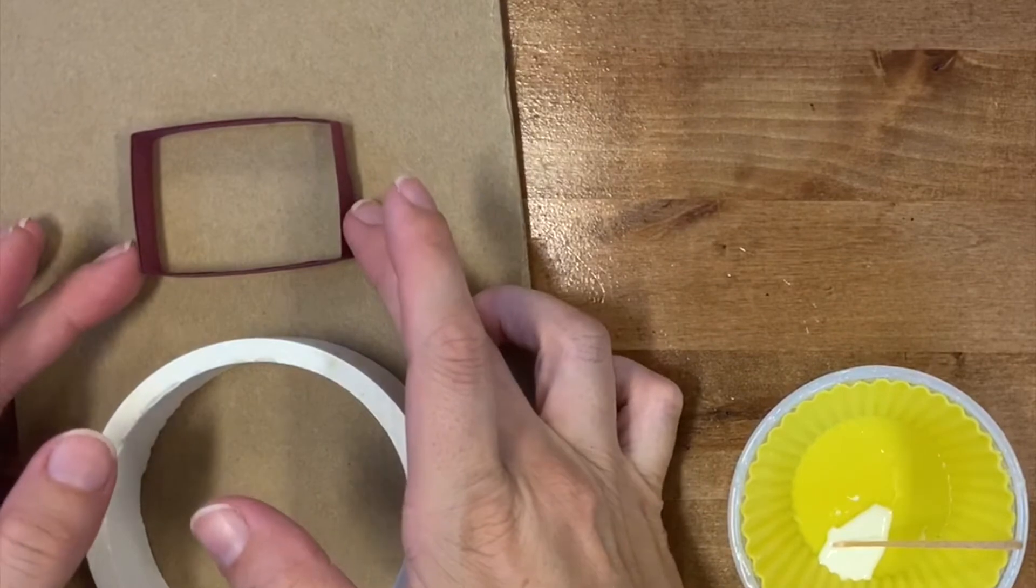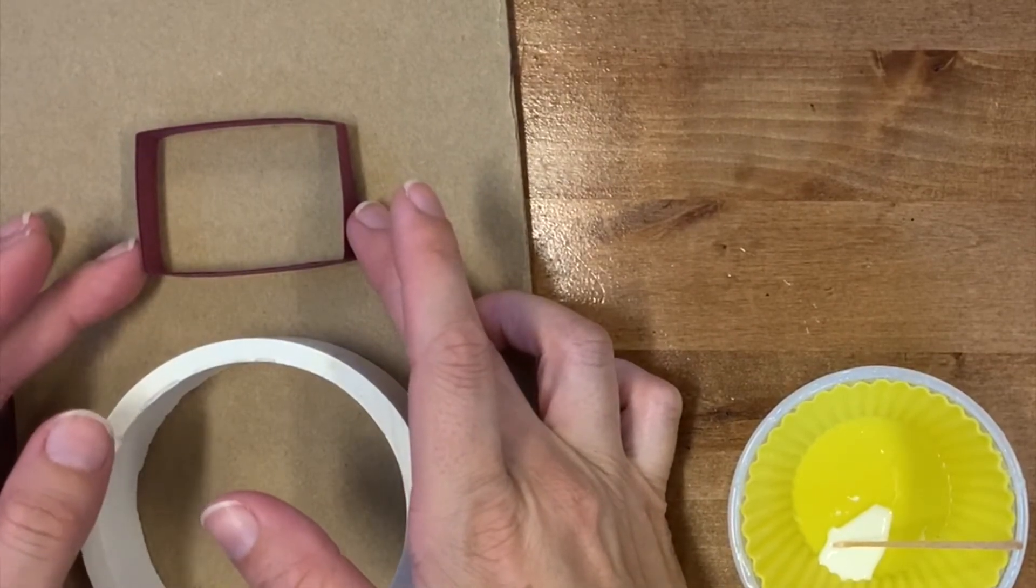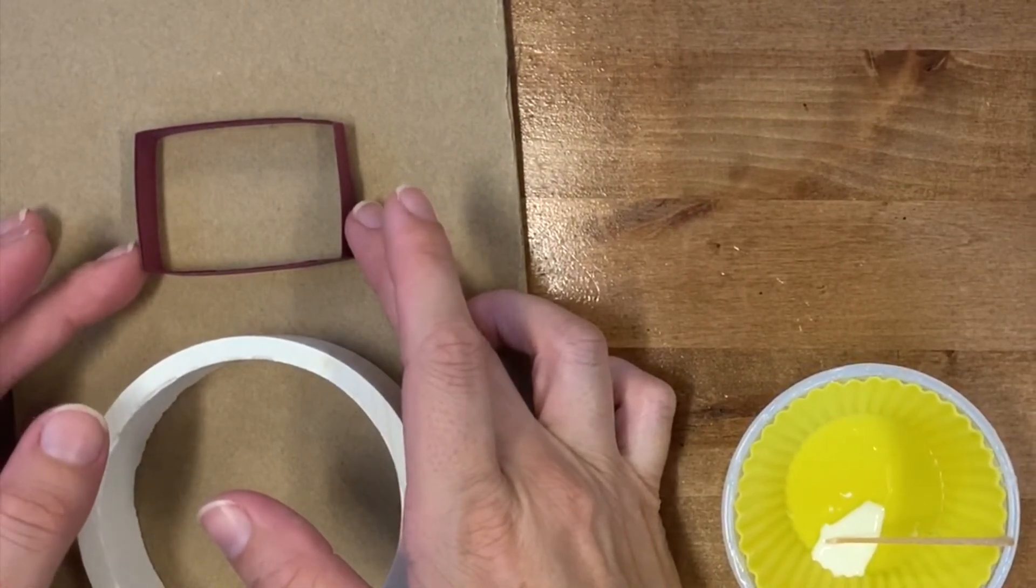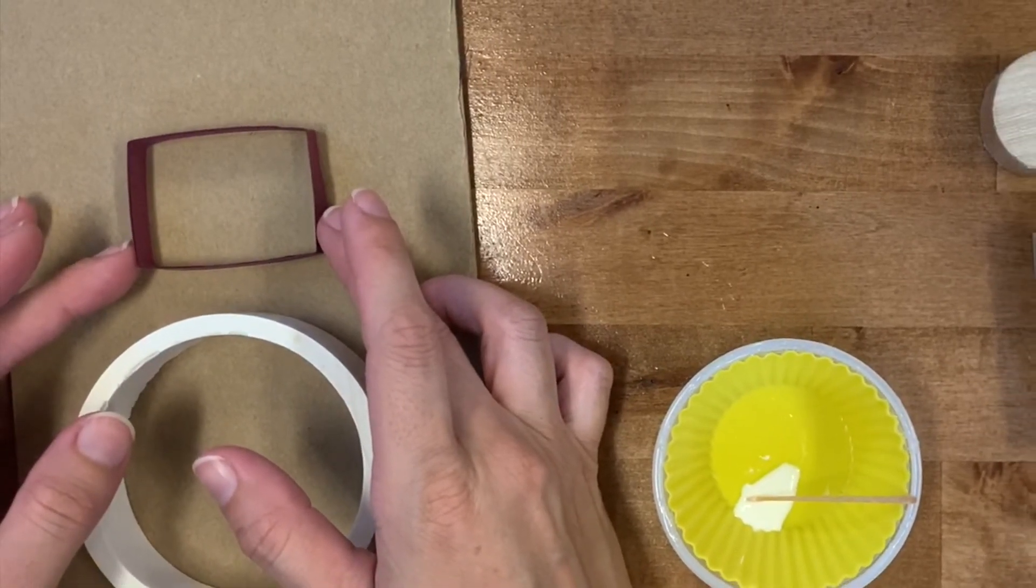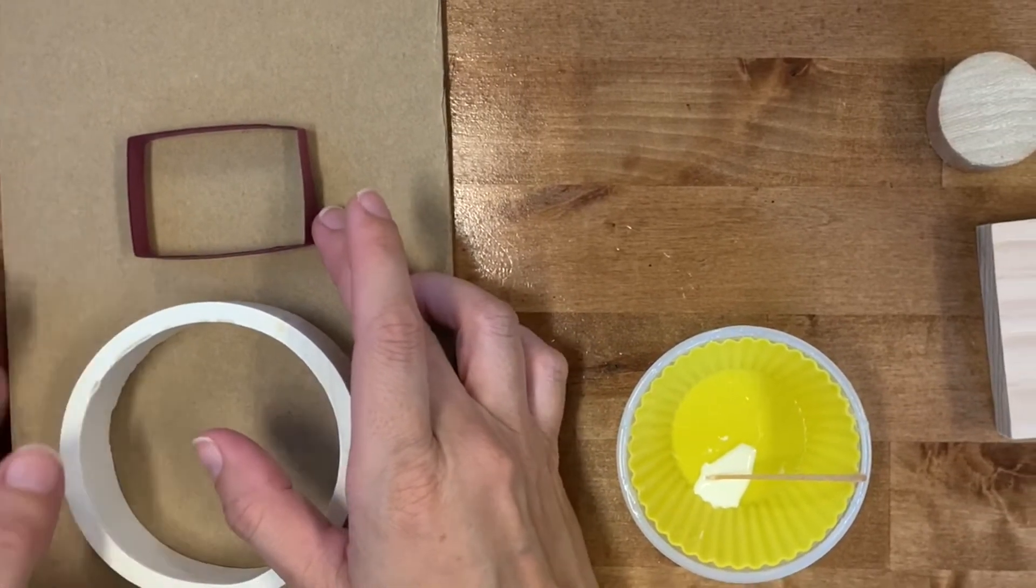If I'm ready to commit to this spot, I can glue it down right away. If I want, I could do a couple shapes first and make sure that they're exactly where I want them before I glue them down. And that's what I'm going to do.